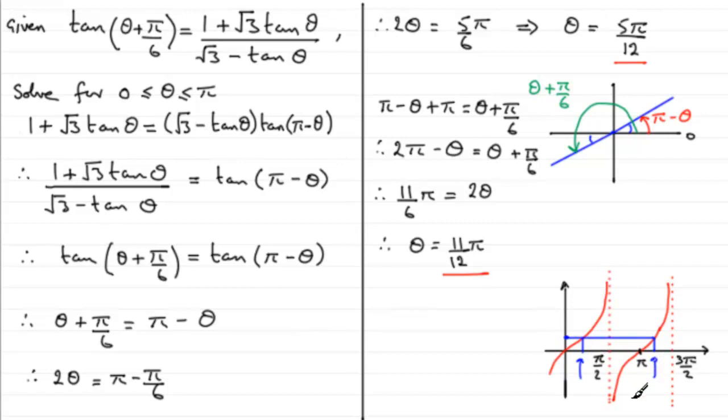These two angles are going to be, well the larger one's going to be theta plus pi upon 6, and this one here is going to be pi minus theta. So they're going to be exactly the same. That would lead us to this result that we had earlier, theta equals 5 pi upon 12.